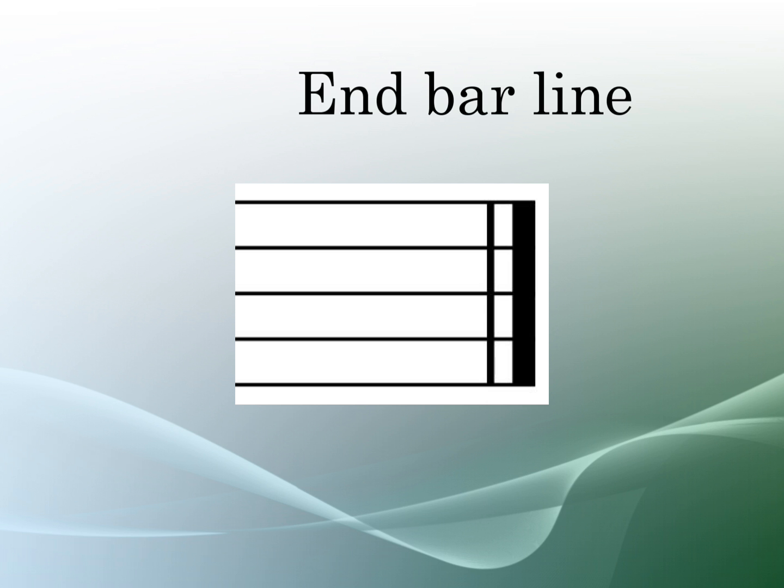An end bar line looks very similar to the double bar line as they have two vertical lines, but in an end bar line the second line is thicker than the first, and these are used at the end of the piece to show that it is completely finished.